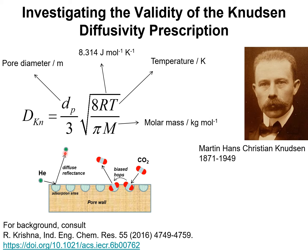This diffuse reflectance scenario holds for poorly adsorbed molecules such as helium and hydrogen. But for more strongly adsorbed molecules — for example, CO2 that adsorbs on the wall surface — there is a tendency for the gas molecule to hop to a neighboring site before returning to the central core region, as was demonstrated in the foregoing video animation for methane. For background to the Knudsen theory, I refer you to my publication in Industrial and Engineering Chemistry Research, 2016.